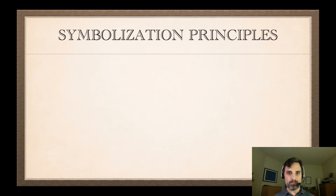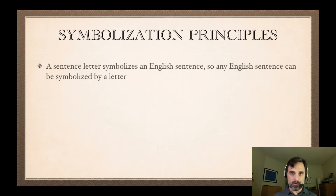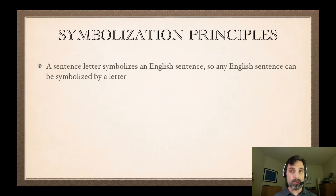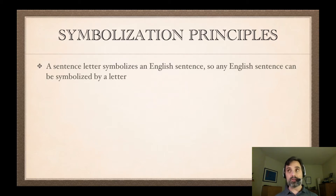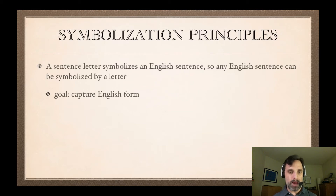So what are the basic symbolization principles? The first principle is this: a sentence letter of the logical language can mean anything, as long as it's a proposition or a claim — something that's true or false. So a sentence letter can symbolize any English sentence at all. For example, the sentence 'if Opus can read, Opus is happy' can technically be symbolized by the letter P, but that's a bad symbolization.